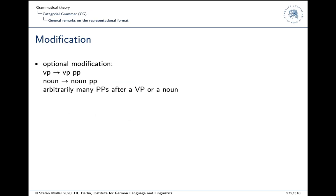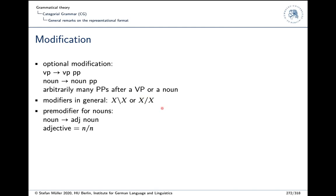What about modification and adjuncts? In phrase structure grammar we would have rules like 'VP may consist of VP plus PP' or 'noun may consist of noun plus PP'. Since these rules are recursive, we could have arbitrarily many PPs following a VP or a noun. In categorial grammar, adjuncts in general have the form X\X or X/X. That's not easy to understand at first sight, but we will look at examples.